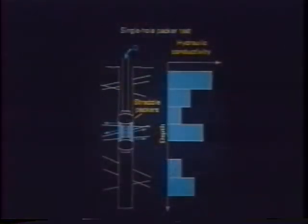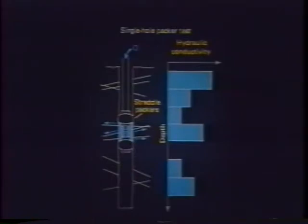We also do packer tests. Packers are instruments that block off a portion of the well — the main part is a rubber sheath inflated with compressed air that seals against the side of the well. We can either inject water or pump water out, measure the flow rate and change in pressure, and determine the hydraulic conductivity of that section. We typically use five-meter sections and move the packers up and down the well to determine a hydraulic conductivity distribution along the entire well.